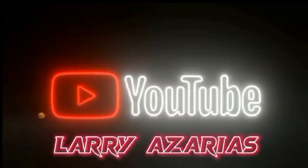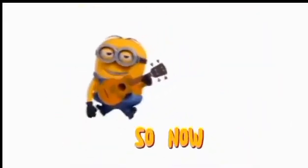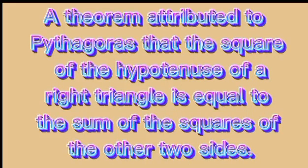All right. Hi everyone, so for today's video, we're going to talk about Pythagorean theorem. But first, what is Pythagorean theorem? Pythagorean theorem is a theorem attributed to Pythagoras that the square of the hypotenuse of a right triangle is equal to the sum of the squares of the other two sides.